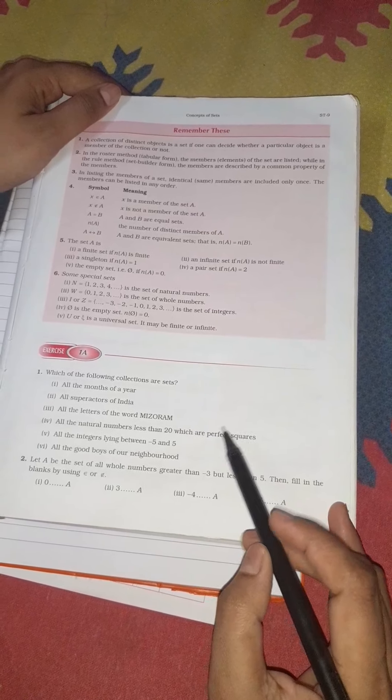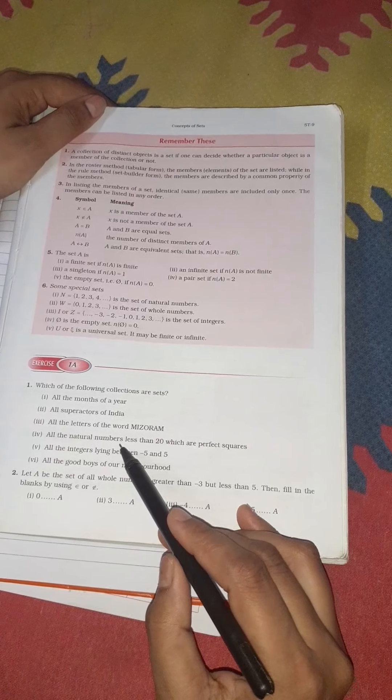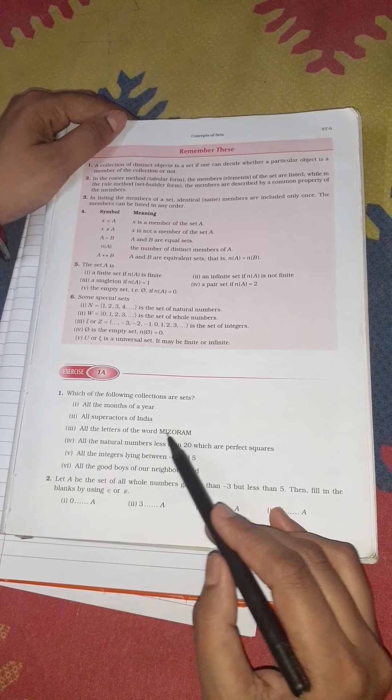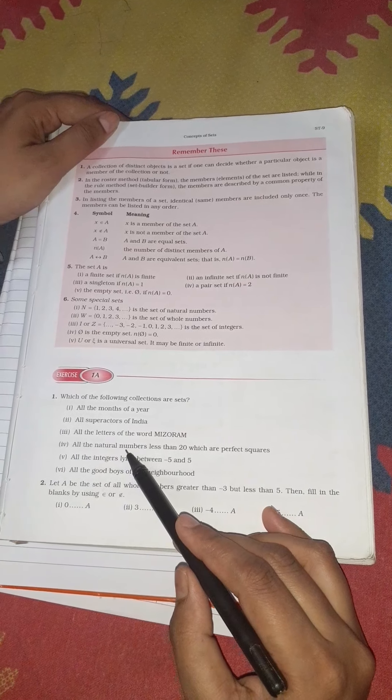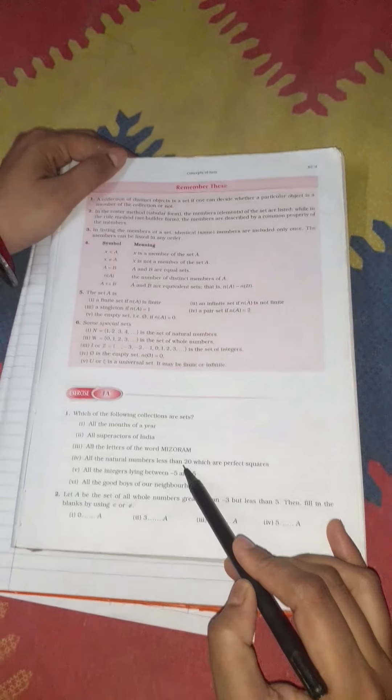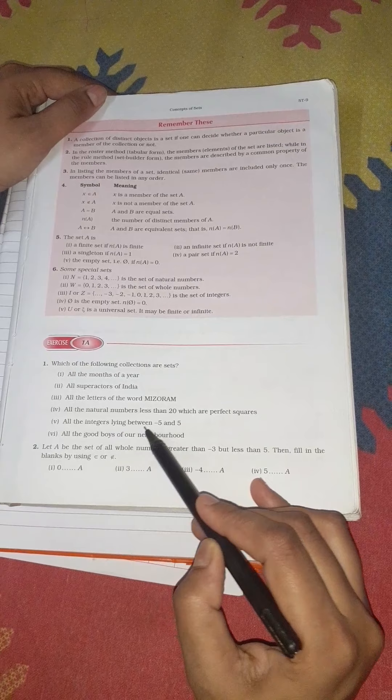All the natural numbers less than 20 which are perfect squares. First, let's discuss what are natural numbers - we all know that numbers start from 1 to infinity. We can count the numbers from 1 to 20, so yes, it is also a set.